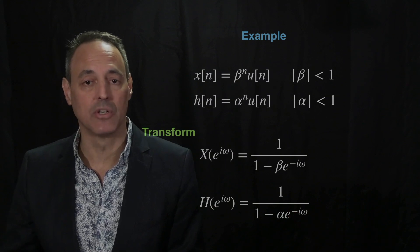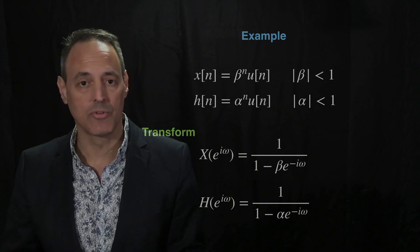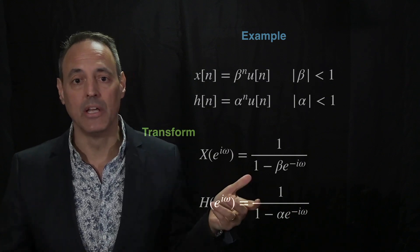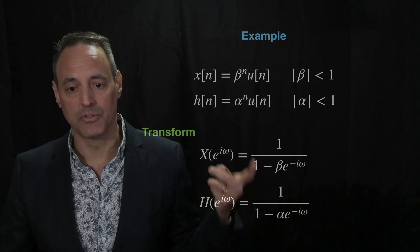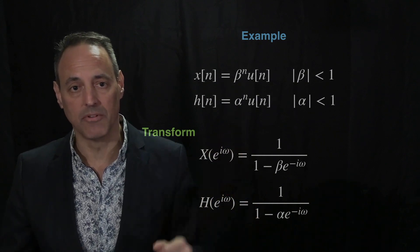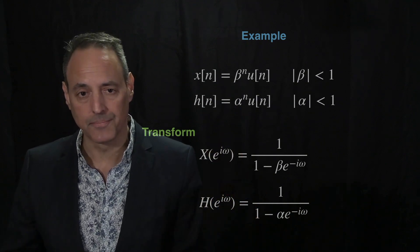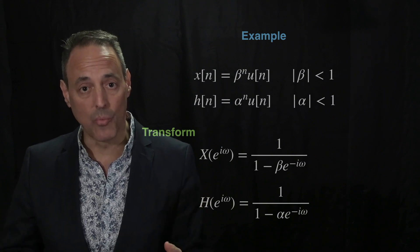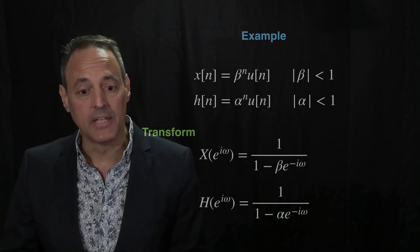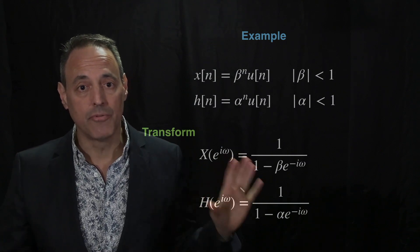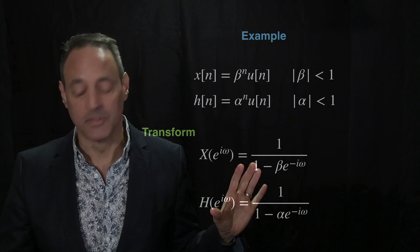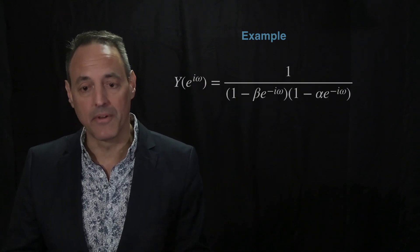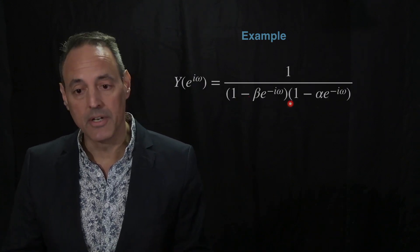These transforms are very easy to work out and typically appear on discrete Fourier transform tables. Now that we have them, the solution Y is the product of these two Fourier transforms — all we have to do is multiply them together.